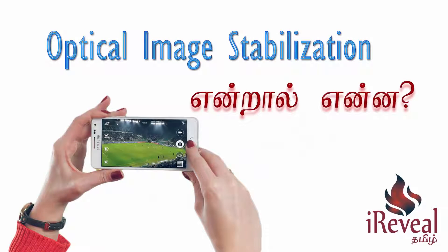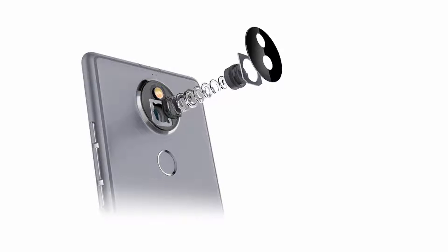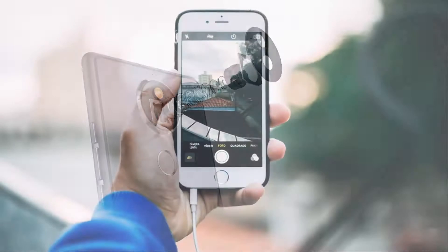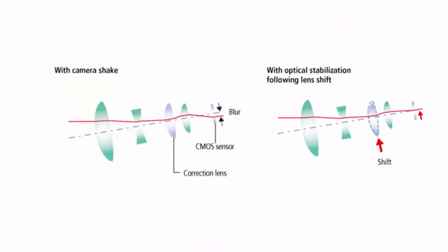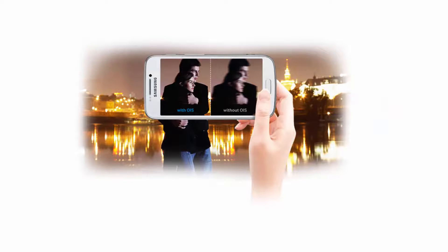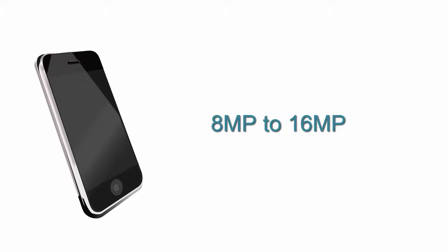In Optical Image Stabilization, a gyroscope sensor detects camera movement. The camera lens physically moves to compensate, keeping photos sharp and clear. This works even in dark environments, producing sharp photos and videos. This stabilization feature is important even for a 16 megapixel camera.